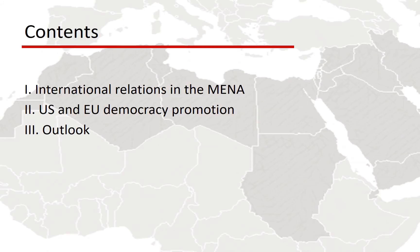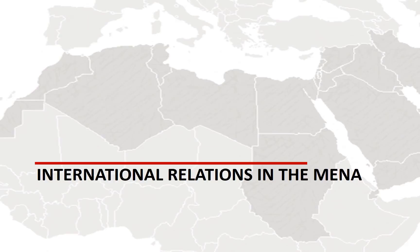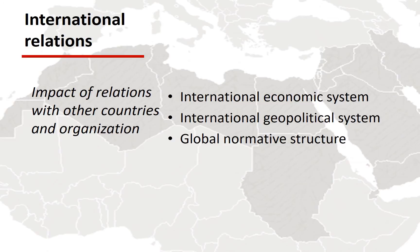International relations consists of three different domains. I will look into one more specifically — the normative structure — and how the US and EU promote democracy in the region. The three domains are: the international economic system, the international geopolitical system, which is very significant for the Middle East, and the global normative structure, which I'll refer to as democracy promotion, looking at how the EU and the US try to promote democracy in the region.